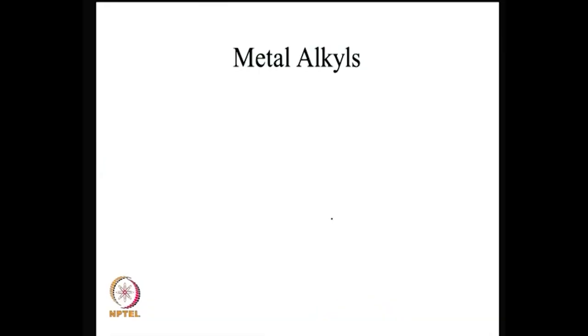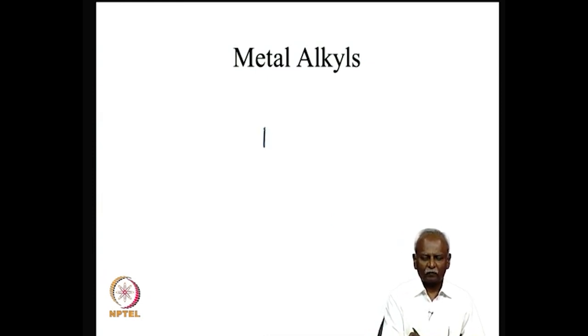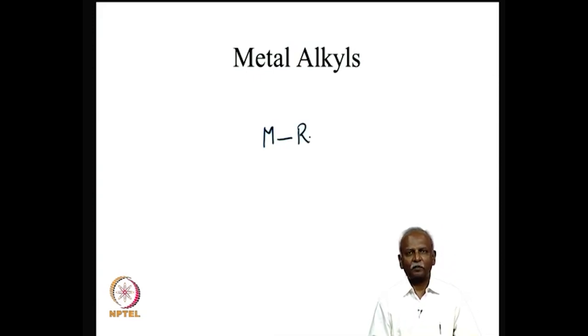Today we will talk about the metal-carbon bond, which is formed between a metal and an alkyl group. By alkyl group, I wish to include aryl moieties, alkyl moieties such as ethyl, methyl or propyl, and other systems like benzyls, allyls, and vinyls. We will group all of these moieties together as alkyls. The chemistry of the M-R bond and how it behaves are the things we are going to talk about today.